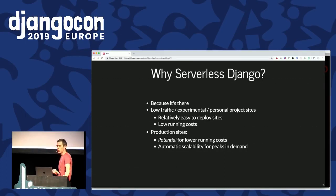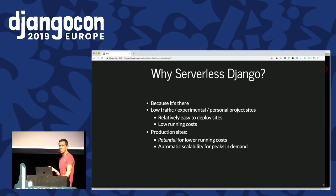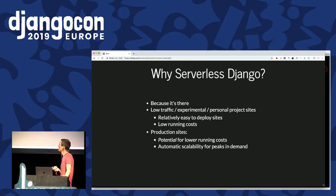So why would we want to do this in Django? Although these are event-driven processes, we can set a WSGI request-response cycle on top of that, and that's what Zappa is going to help us with. Particularly for low traffic, experimental, or personal websites, it's relatively easy to deploy in this way and get something up quickly. It doesn't have to be on all the time, just when you want to use it. Relatively low running costs in that model, but also for bigger production sites, potential for lower running costs.